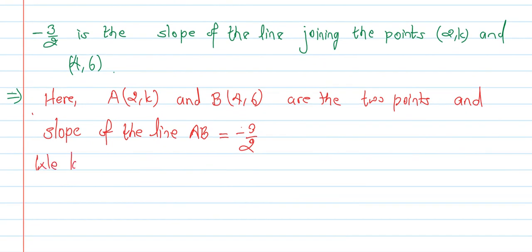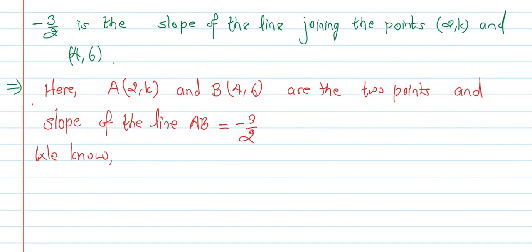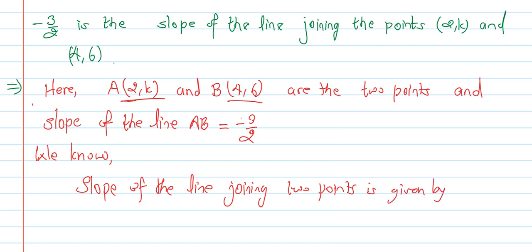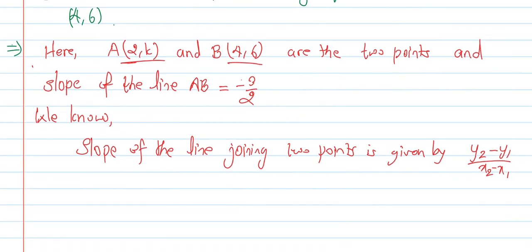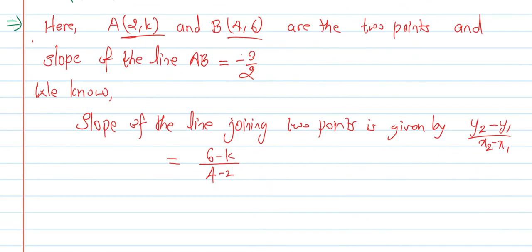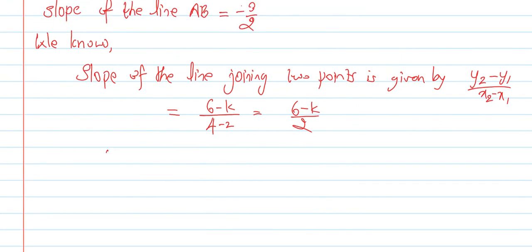We know slope of the line joining two points is given by (y2 - y1) upon (x2 - x1). So (6 - k) upon (4 - 2).